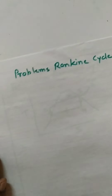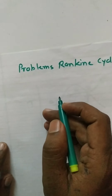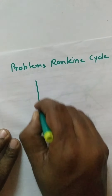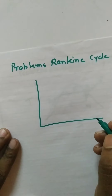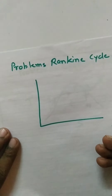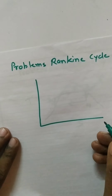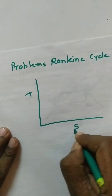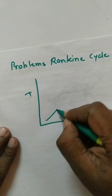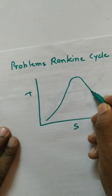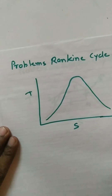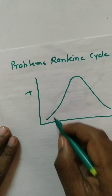Whenever a problem is asked based on cycles — whether Otto cycle, diesel cycle, dual cycle, or Rankine cycle — the first step is to draw the cycle. We generally prefer the Rankine cycle on a T-S plot, that is a temperature versus entropy plot. On that plot, we draw the steam dome, which includes the saturated vapor line, saturated liquid line, and the critical point.